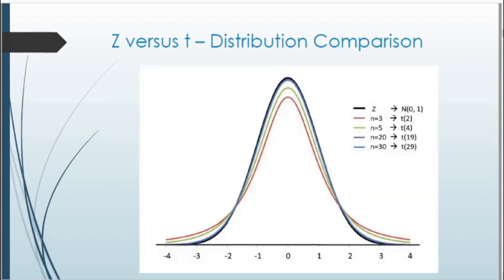Here's a comparison of the t-distribution versus the normal z. The black curve is the standard normal distribution with mean zero and standard deviation one — that's where we use z scores. The red curve, with the smallest sample size of n=3 (degrees of freedom = 2), looks similar to normal but has wider tails. As sample sizes increase — n=5 (green), n=20 (purple), n=30 (blue) — the t-distribution starts to look more and more like the normal distribution.